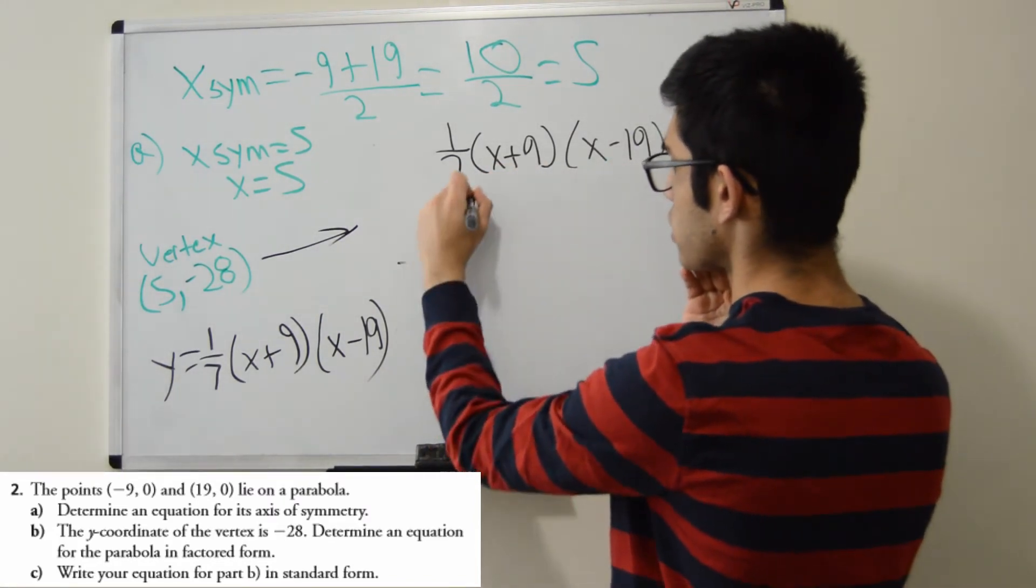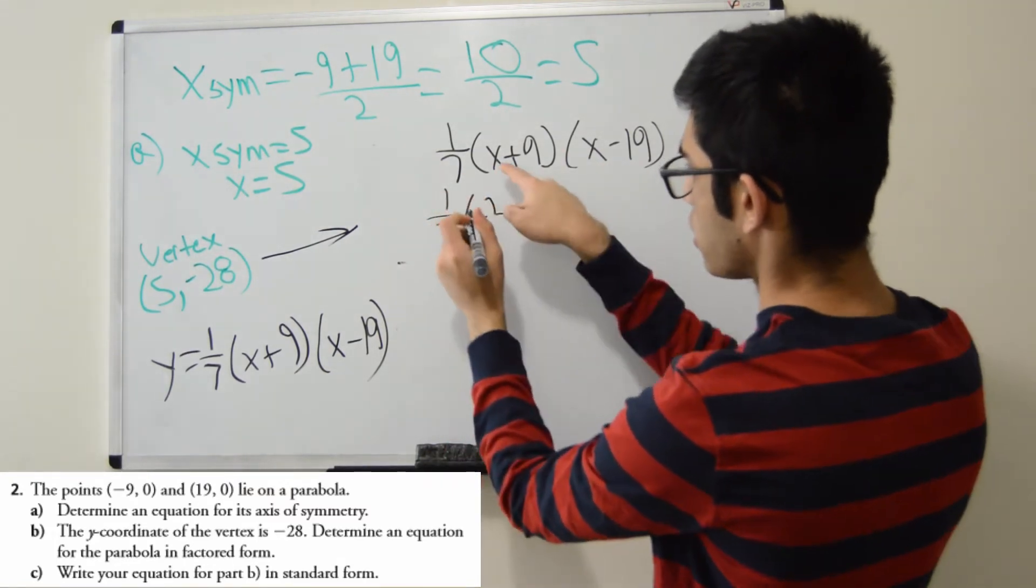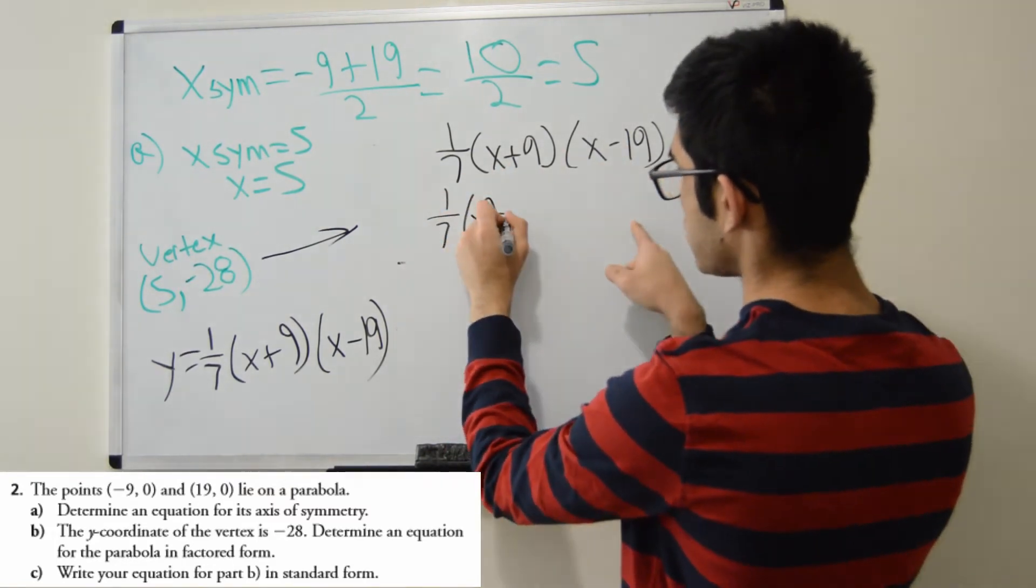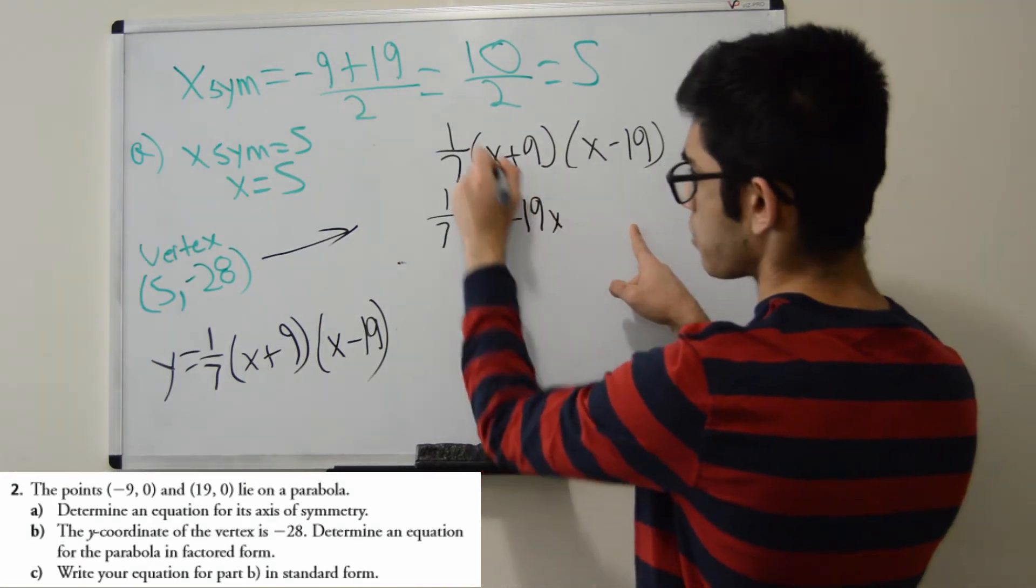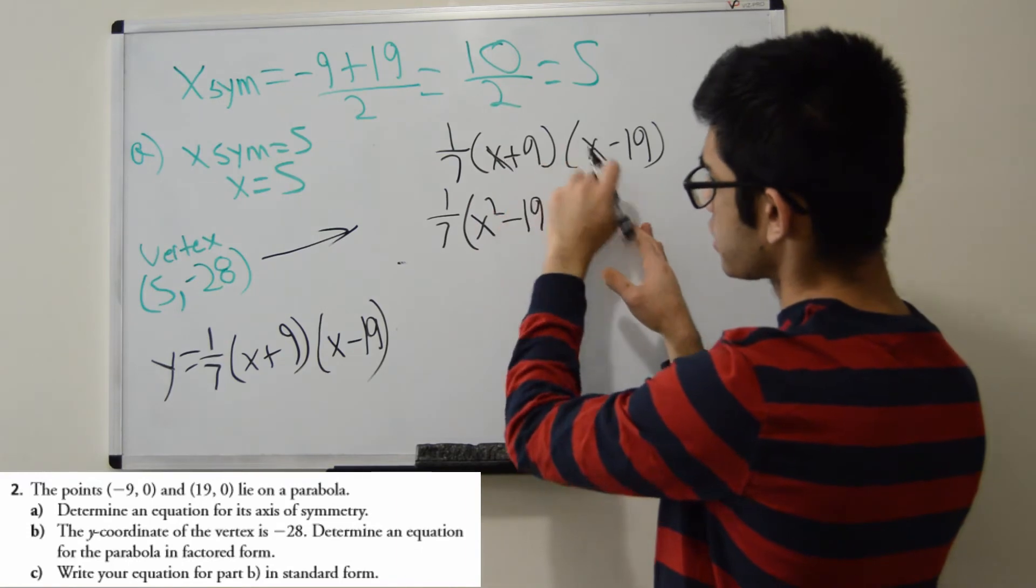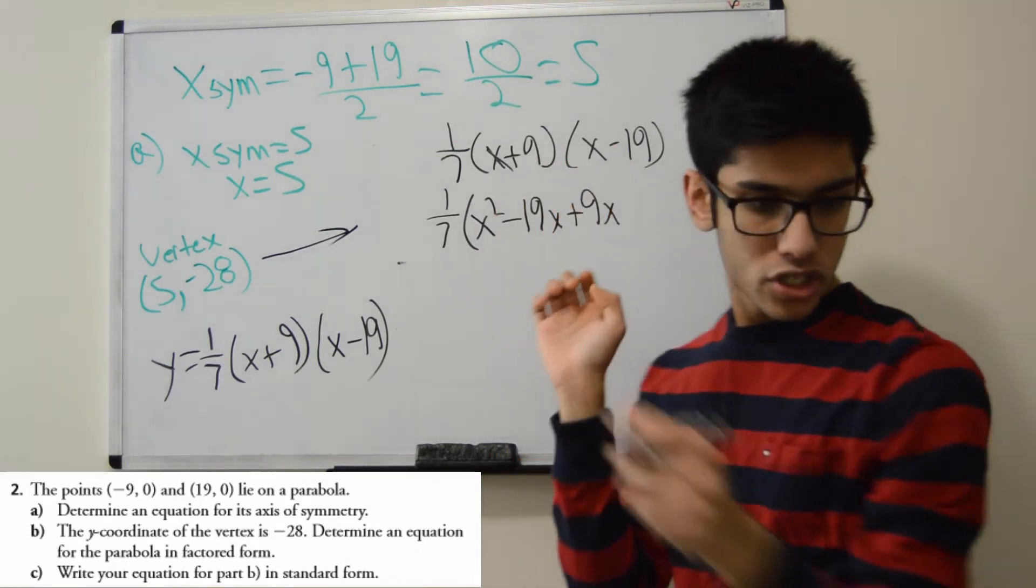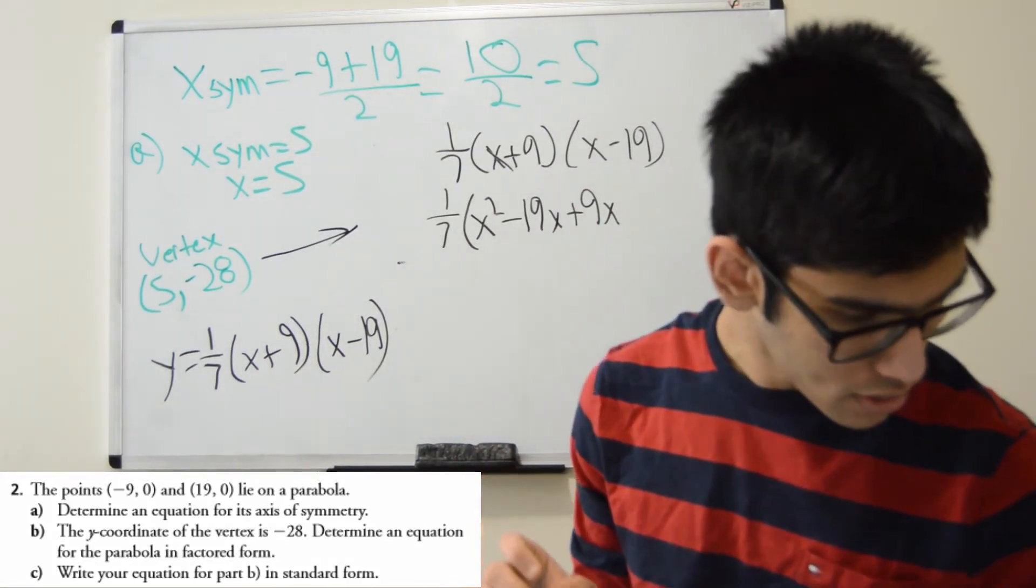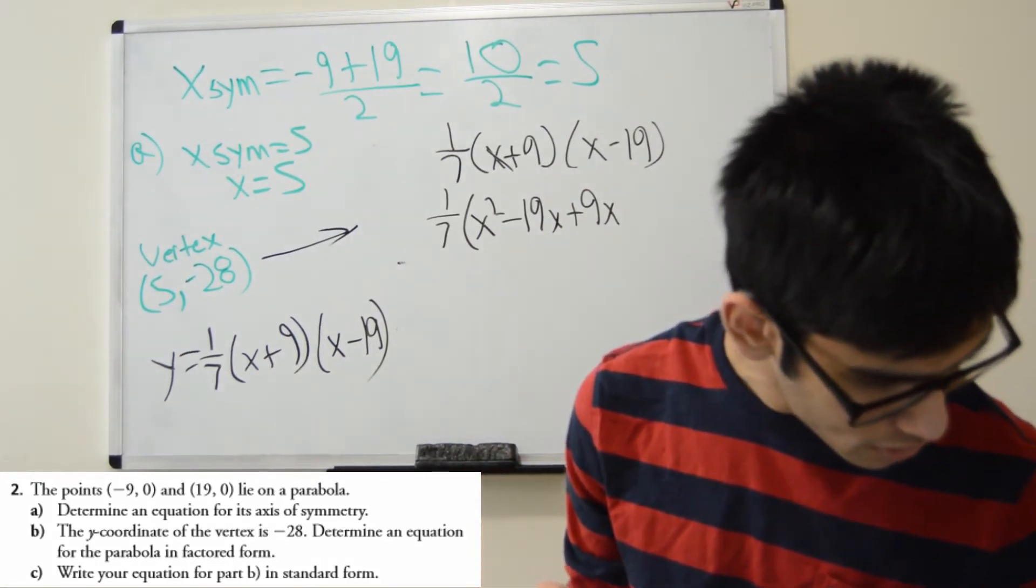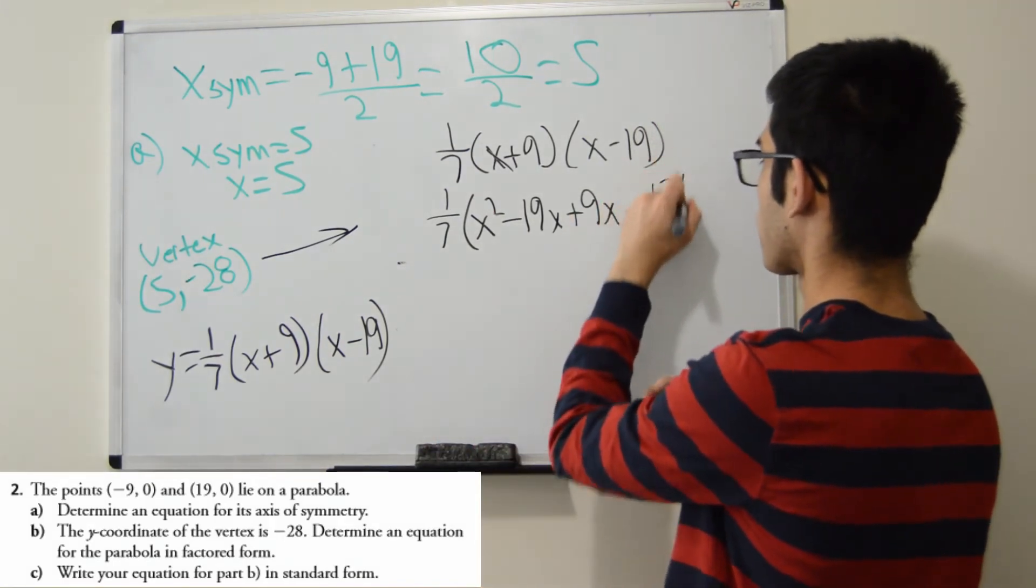So 1/7, you can stay on the outside. So first, x times x, so x squared, and then x times -19, which is -19x. I'm done with the x here. So next is 9 times x, which is +9x. 9 times -19, which I believe is -171. There we go.